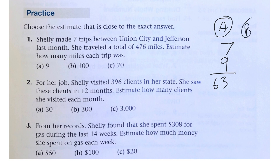And B, if she went 100 miles for the seven trips, then that would be 700 miles. And C, if she went 70 miles for the seven trips, well, that would be about 490 miles.